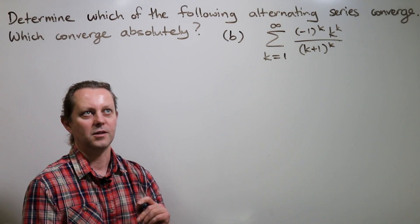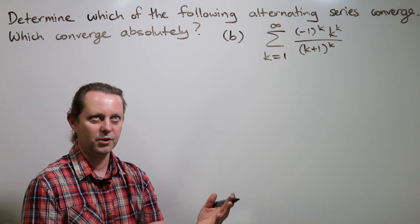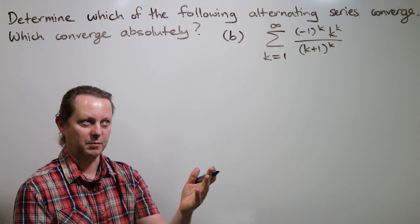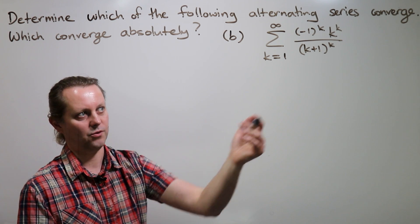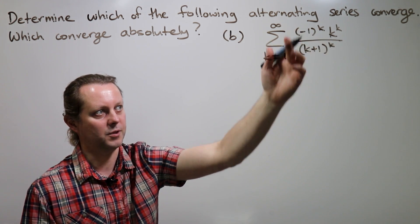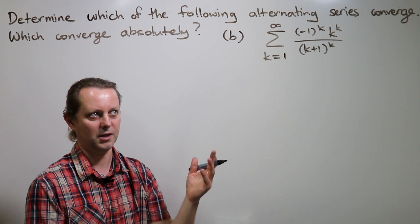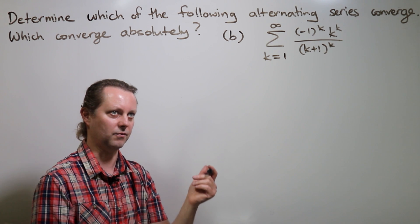So here we have another alternating series. And again, we'd like to check whether it converges and whether it converges absolutely. And as before, the first thing to do is to check whether or not the terms in the series are going to zero. In other words, use the nth term test to see whether or not the series has got any chance of convergence.